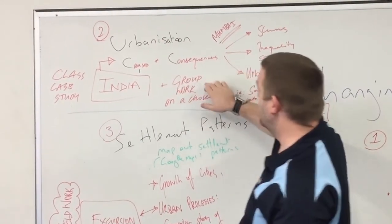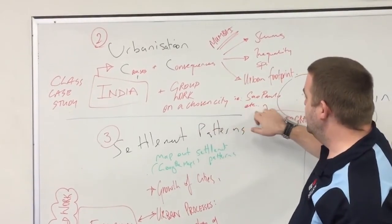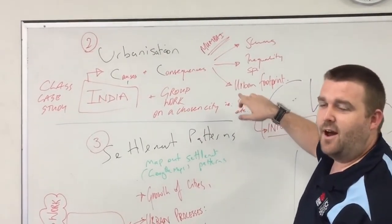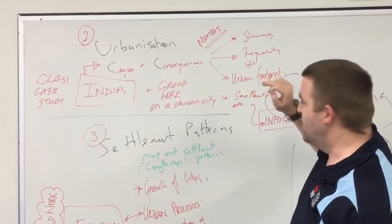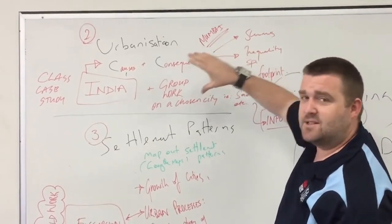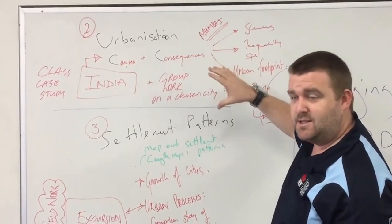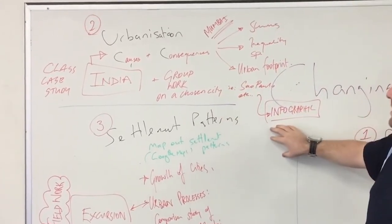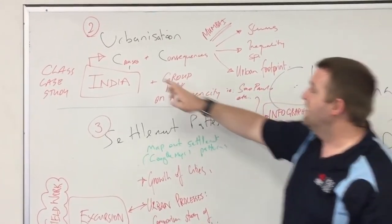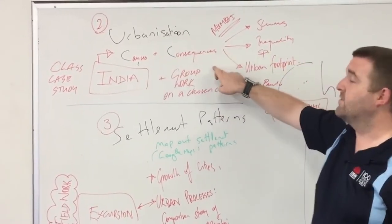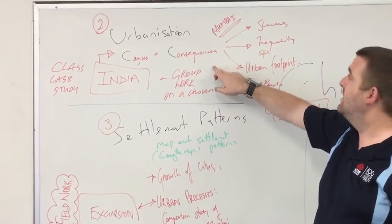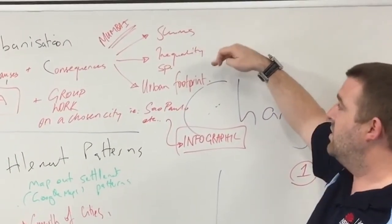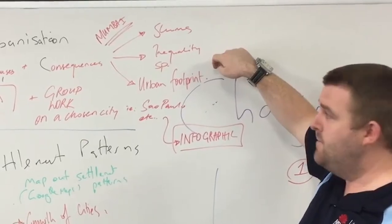So we'll look at, in group work, we'll give them a chosen city — São Paulo, Tokyo, places like that — big mega cities — and see how they urbanised. They'll create an infographic which will look at the causes of that urbanisation and the consequences. Things like, were there slums? Is there spatial inequality? How big is the urban footprint of the city?